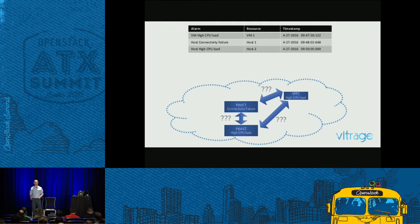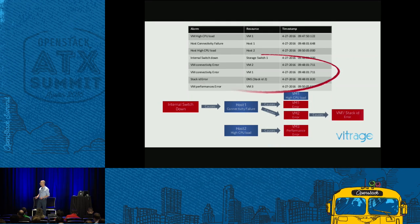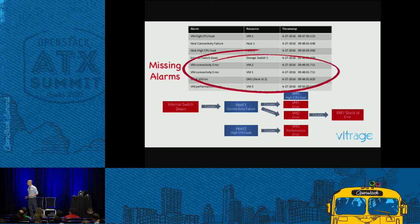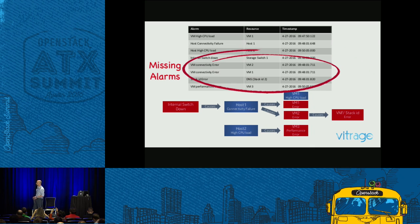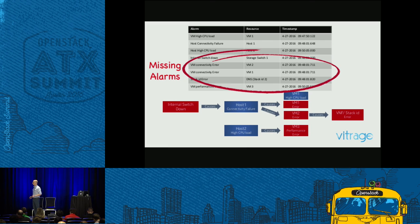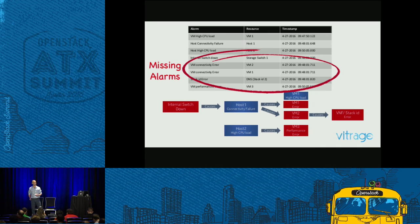Let me take you behind the scenes to see what really happened. We have two major failures: a switch down connected to host number one, which causes the VM on host number one to be down, affecting my application. And separately, there is a CPU load failure on host number two, which affects the performance of VM number three. Now I can see the whole picture — I was actually missing some alarms and missing the relationships between them. This is exactly what Vitrage is trying to do.